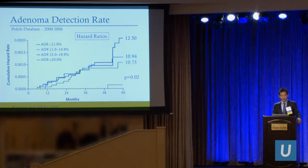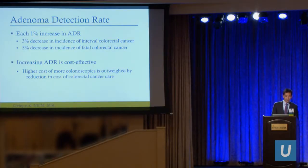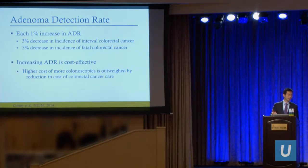ADR is an independent predictor of the risk of interval cancer. Further studies show that each 1% increase in ADR is associated with a 3% decrease in incidence of interval colorectal cancer and a 5% decrease in fatal colorectal cancer. They also found that increasing ADR is cost effective: though a higher ADR brings more patients back for surveillance colonoscopies, the higher cost is outweighed by the reduction in colorectal cancer care — imaging, chemotherapy, surgeries. Picking up cancers early actually saves money for the healthcare system.